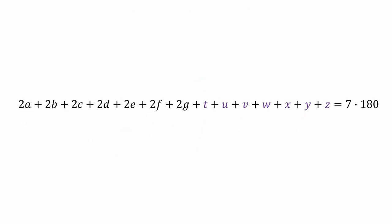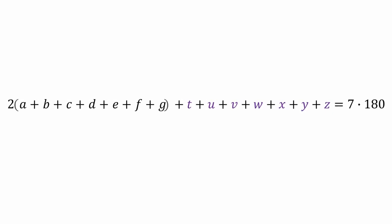Let's factor out a 2 from the first 7 terms. And now those 7 interior angles of the heptagon, which we labeled T through Z, must have a total sum of (n-2)×180. And since n is 7, they add up to 5×180. So I can replace all 7 of those variables with 5×180.